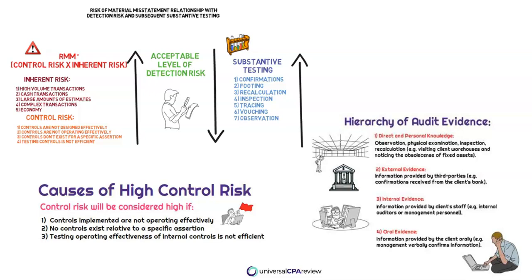If we want to get a high level of evidence, we're going to perform procedures that have direct and personal knowledge — meaning we're going to observe inventory or go see if something's obsolete. The next best piece of evidence is external evidence, and the main one there is going to be confirmations.